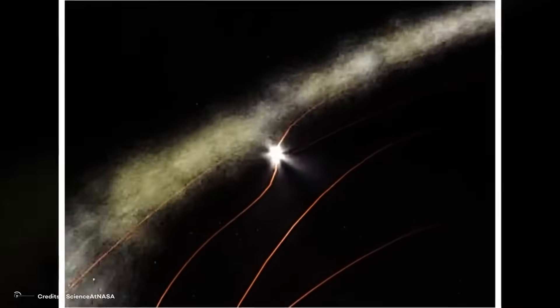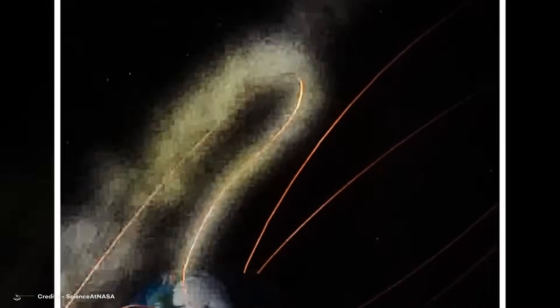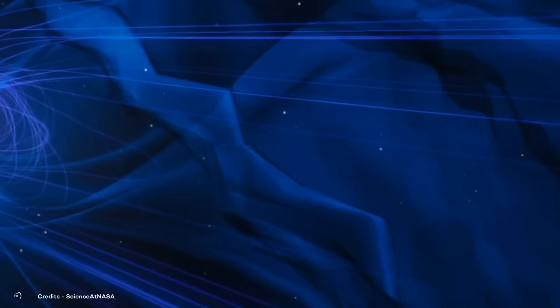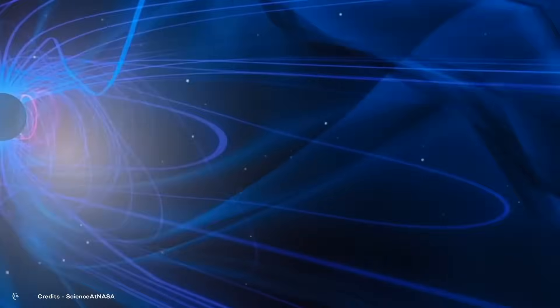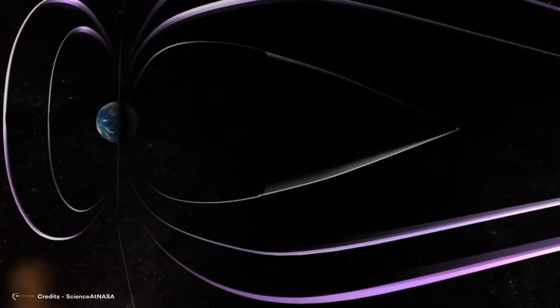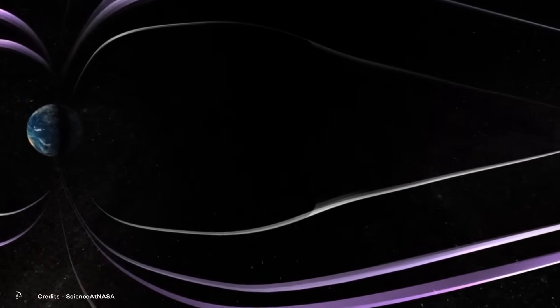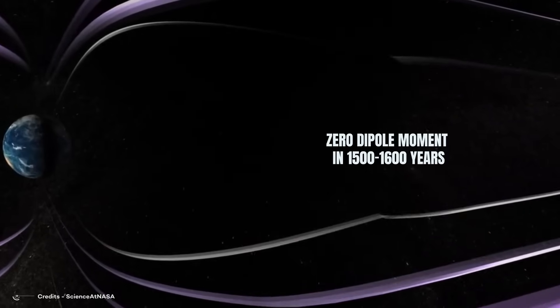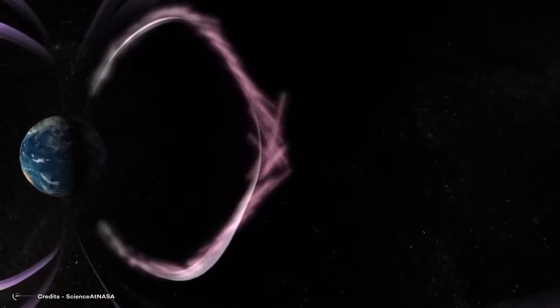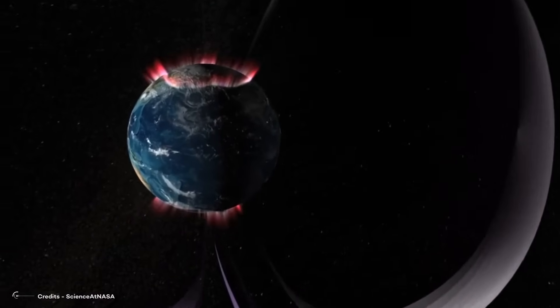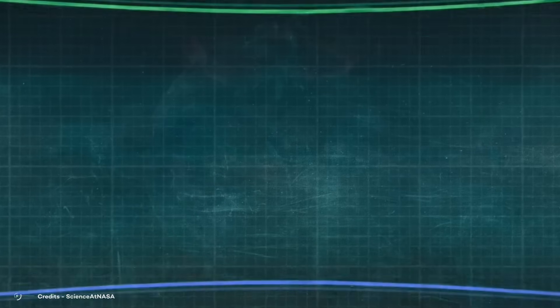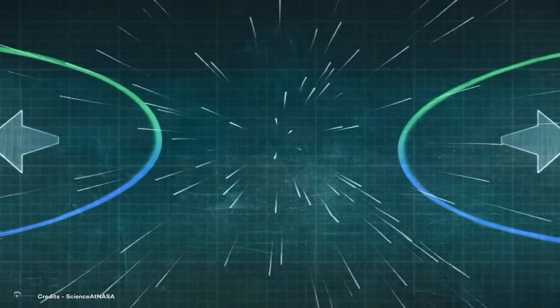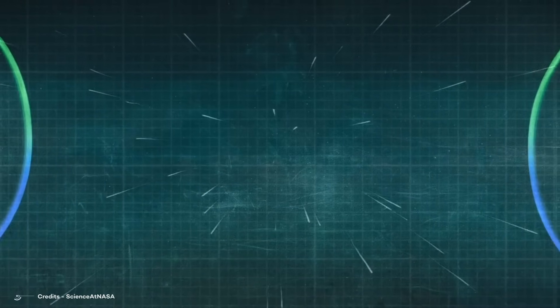As we already mentioned, measurements of the Earth's magnetic field have been ongoing since around 1840, with some records extending as far back as the 1500s, notably at Greenwich in London. Analyzing the trend in the magnetic field's strength over this period reveals a consistent decrease. Extrapolating this trend into the future suggests a potential zero-dipole movement in approximately 1500 to 1600 years. This declining trend is one factor leading some individuals to hypothesize that the Earth's magnetic field may be in the early stages of a reversal.